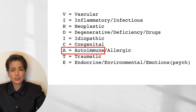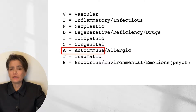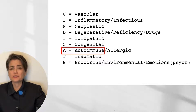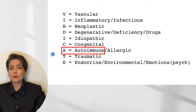It can be very challenging to make a diagnosis of autoimmune diseases. This is in part because of their protean manifestations, so it's important to have a systematic approach to the differential diagnosis. Here's one mnemonic that we use here at Duke to help students remember to include all of these different potential etiologies.